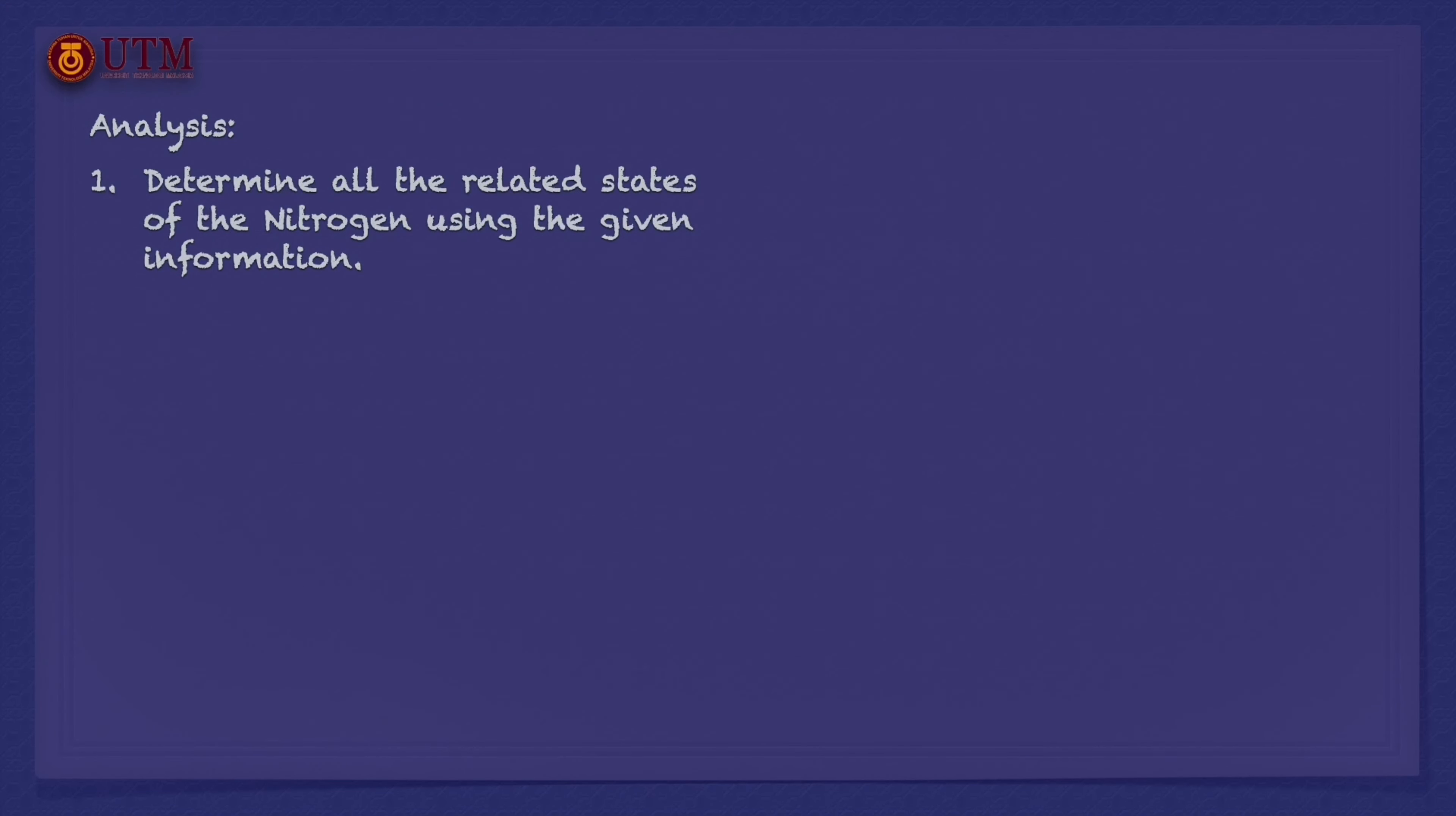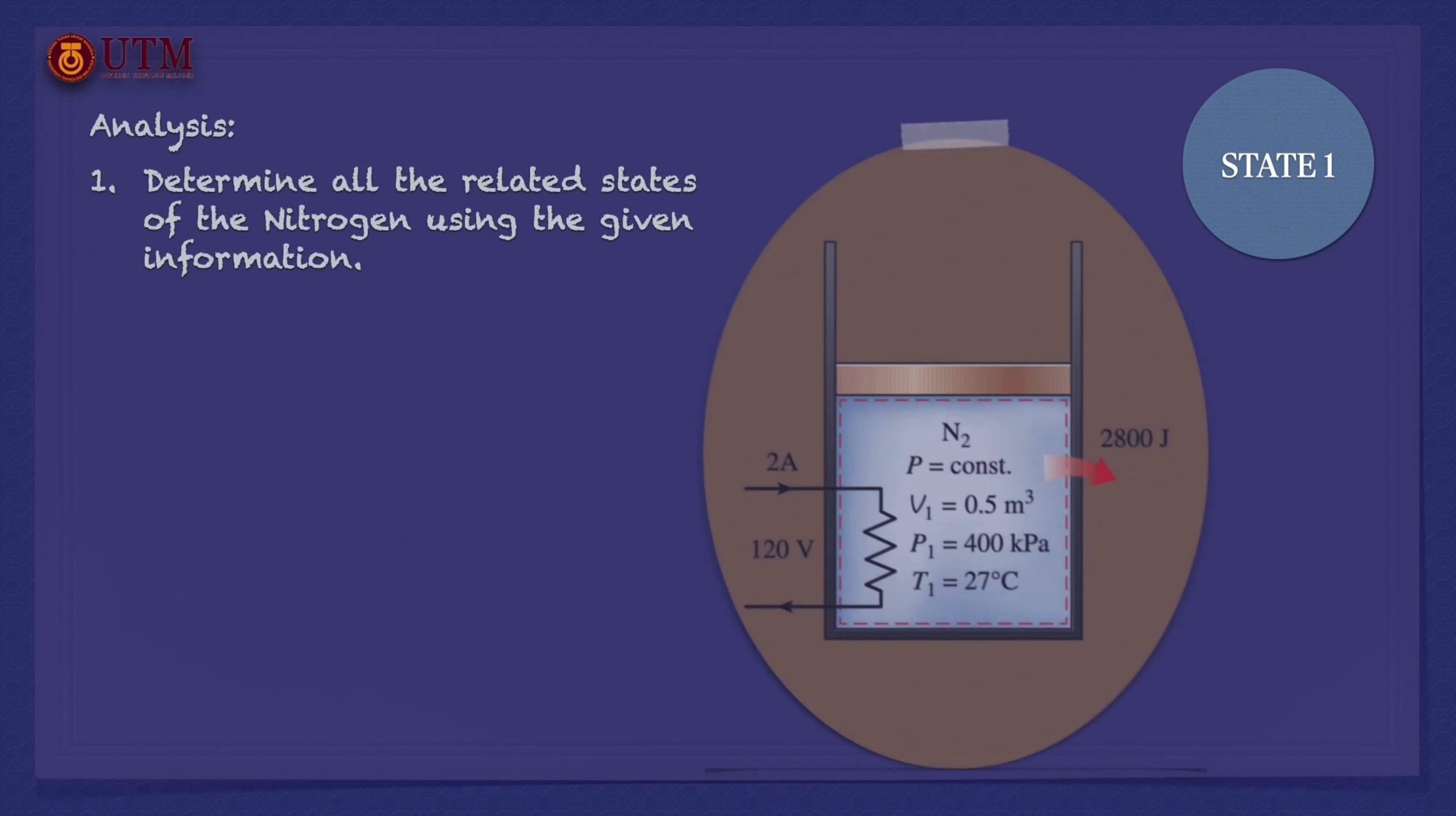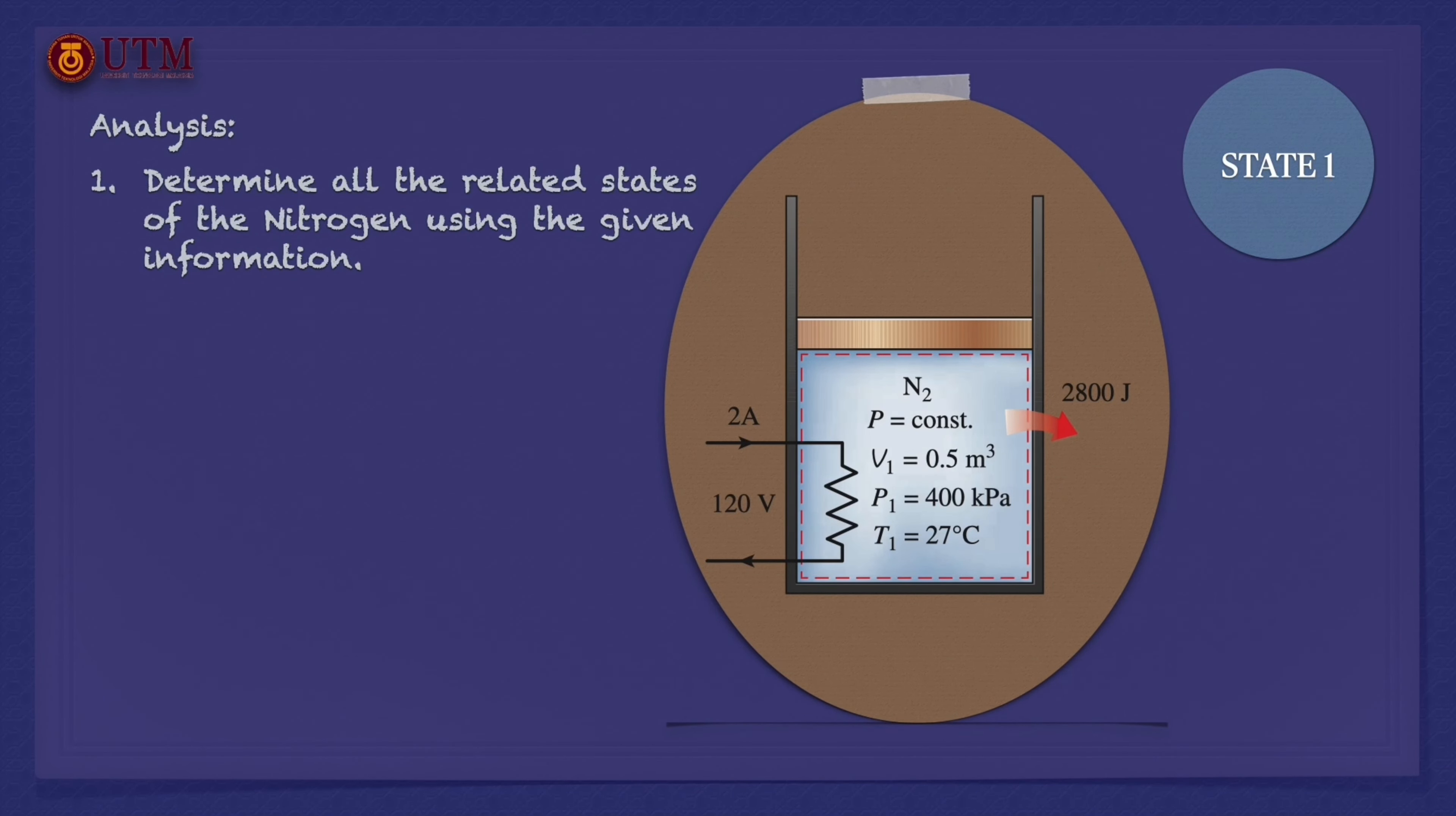For step one, we begin by determining nitrogen properties at state one using the available information. The gas initial volume, pressure and temperature have been provided as shown. Those properties represent state one.